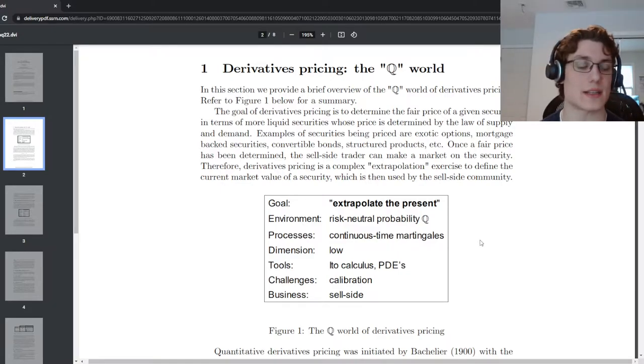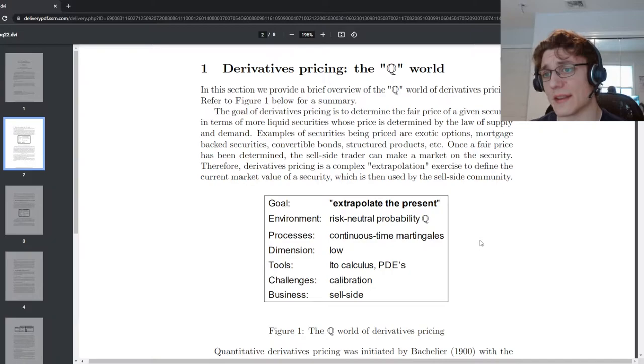Everything is generally continuous time Martingale, and we use the Ito calculus and PDEs to get our nice guarantees. But that's what we mean by extrapolate the present. We're trying to develop prices that are competitive based on the current derivative prices in the marketplace right now. So we want to match our liquid instruments to the best of our abilities when we have illiquid instruments that we're trying to price on the sell side. So I think this does a great job of summarizing the Q quant world.